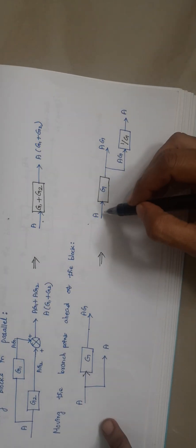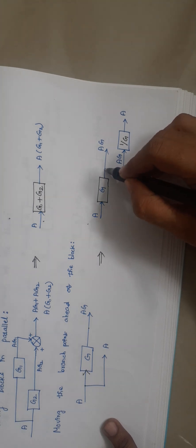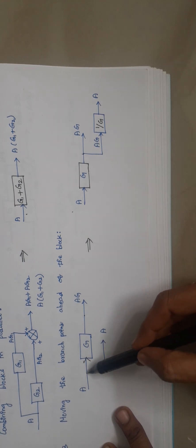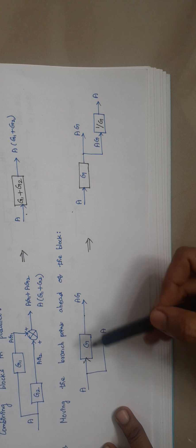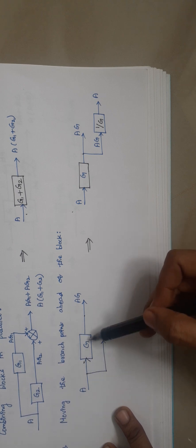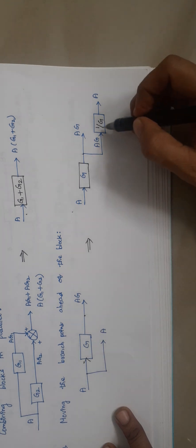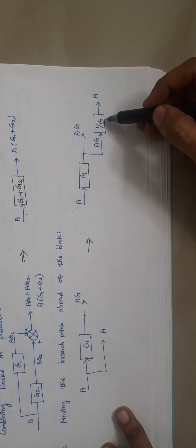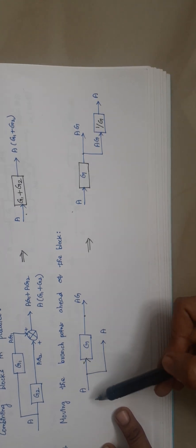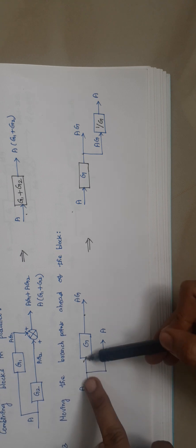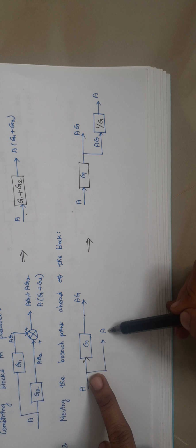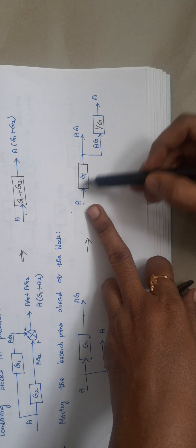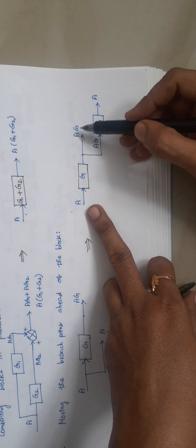Whenever a branch point is moved ahead of the block, the element that must be included in the branch is the reciprocal of G — that is, 1/G. So here the input is A and the respective outputs are A·G from the main path. The branch point signal A·G is given as input to the block 1/G, and when multiplied, A·G × (1/G) gives output A, since G and G cancel.